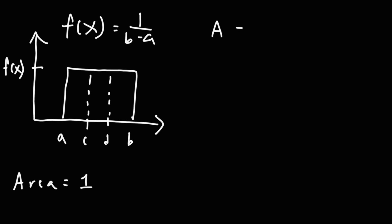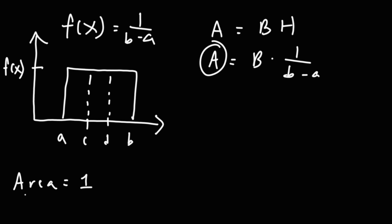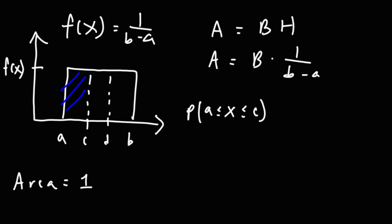Whenever you need to calculate the area, it's base times height. The base can vary depending on how much of the area you want to calculate — it could be from a to c or a to d. The height, which is f of x, is 1 over b minus a. So the area — which is basically the probability — if we want to find the probability that x is between a and c, the base is the width of the shaded region.